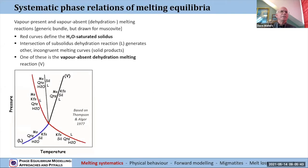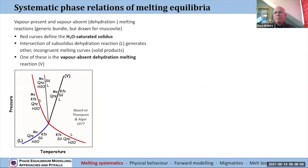Starting with a diagram that's based on one from Thompson and Al Gore, a simple bundle of reactions. The idea is that basically wherever a subsolidus dehydration reaction meets the solidus for the relevant bulk composition, you will have a situation like we have on the left-hand side here.